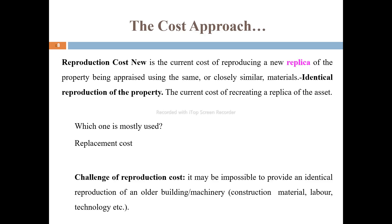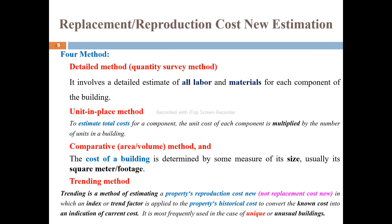The replacement cost determines the value of the asset. The first method is the detail method. In the detail method, each and every component of the building is costed — all direct material, all direct labour, all indirect cost, all costs of the building including materials such as steel, cement, and other common materials. The detail method determines the replacement or reproduction cost.